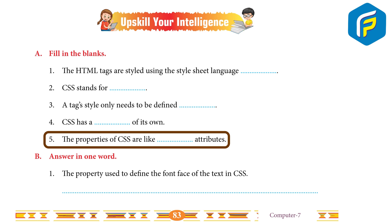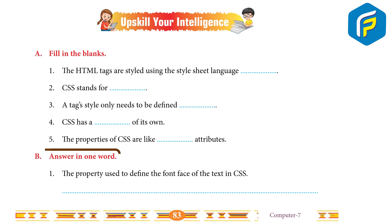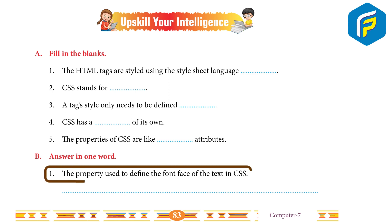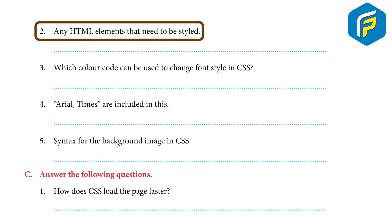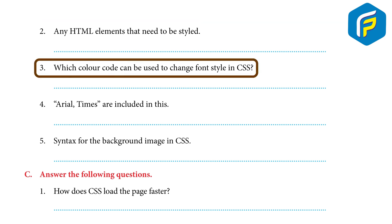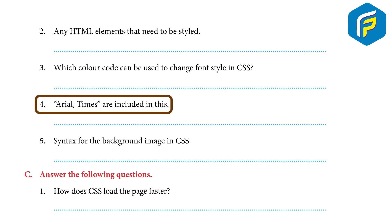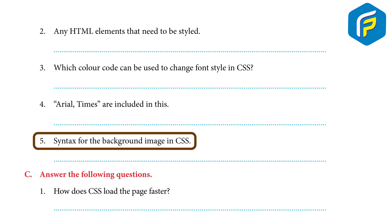5. The properties of CSS are like — answer: HTML attributes. Answer in one word: 1. The property used to define the font face of the text in CSS — answer: CSS font-face. 2. Any HTML element that needs to be styled — answer: selector. 3. Which color code can be used to change font style in CSS — answer: RGB color code. 4. Arial, Times are included in — answer: CSS font-face family name.